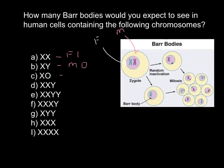As long as there is only one X chromosome, this is going to be female, and zero Barr bodies would be formed. D is also a genetic disorder; it's called Klinefelter syndrome.